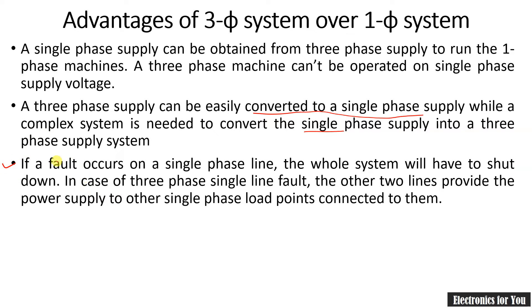If a fault occurs in a single-phase line, the whole system will have to shut down. While in case of a three-phase system, if there is a fault in any one phase, the other two lines will still provide the power supply and therefore the system will remain active.